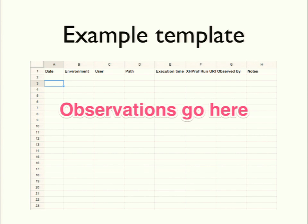When you have more than one person working on a site and recording observations, it can be really handy to have a structured way to write down your observations. I like to use a simple Google spreadsheet recording the date, the environment, the user logged in, the path, the execution time, a URL to the XHProf run file, the observer, and notes. If you're loading the same page many times tweaking settings and disabling caches, you'll likely forget the exact set of conditions you used — so having this as a scratchpad, shared across a team, is really helpful.